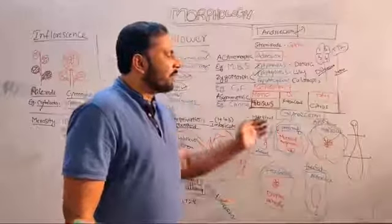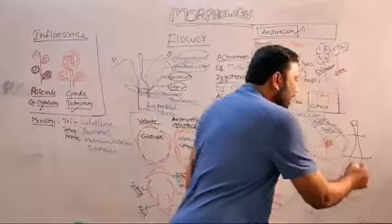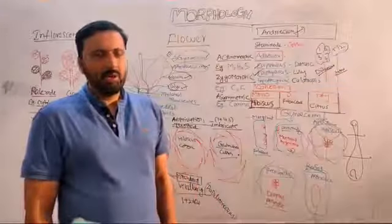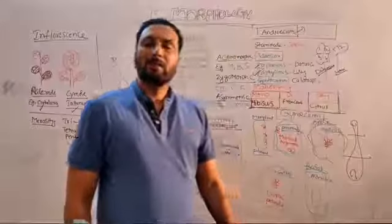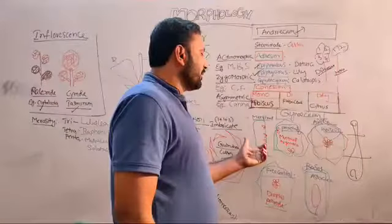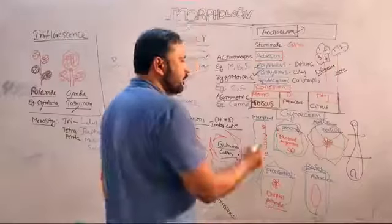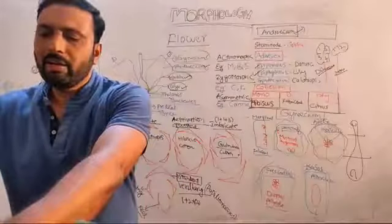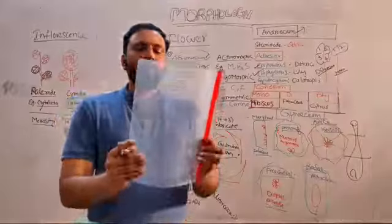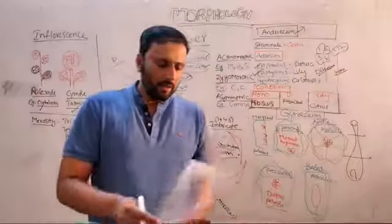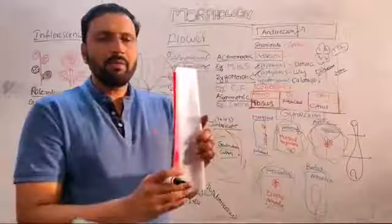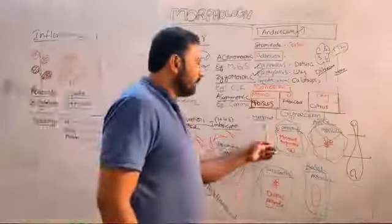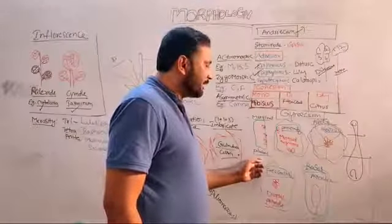Ovules are arranged inside the ovary — the mode of arrangement of ovules in the ovary is called placentation. Marginal placentation — ovules born on the margins, present in Fabaceae family. The carpel is a modified leaf; where the margins fuse it is called ventral suture, the other side is dorsal suture. Ovules are born on the ventral suture in two vertical rows — example Fabaceae.